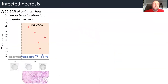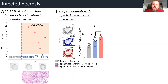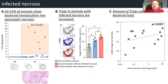After these results, we were interested in whether we could also observe infected necrosis in our model of the disease. In 20 to 25 percent of our animals, we can observe an infected necrosis within the pancreas in a classical way of bacteria. Furthermore, we looked at whether we could observe differences in the regulatory T-cell response in these animals. Animals which have infected necrosis show a significantly higher amount of regulatory T-cells, and in a correlation analysis, we see a significant shift to regulatory T-cells when infected necrosis is present.